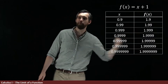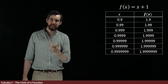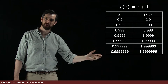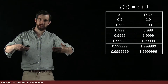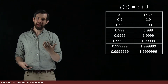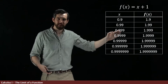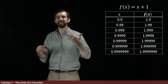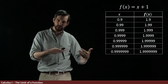Because it's x plus 1, it's easy to do — I just add 1. The x values I'm taking are 0.9, 0.99, 0.999, and so on. These are numbers getting closer and closer and closer to the value of 1. And if I think about what's happening to f of x: 1.9, 1.99, 1.999, and so on — it is getting closer and closer to the value of 2.